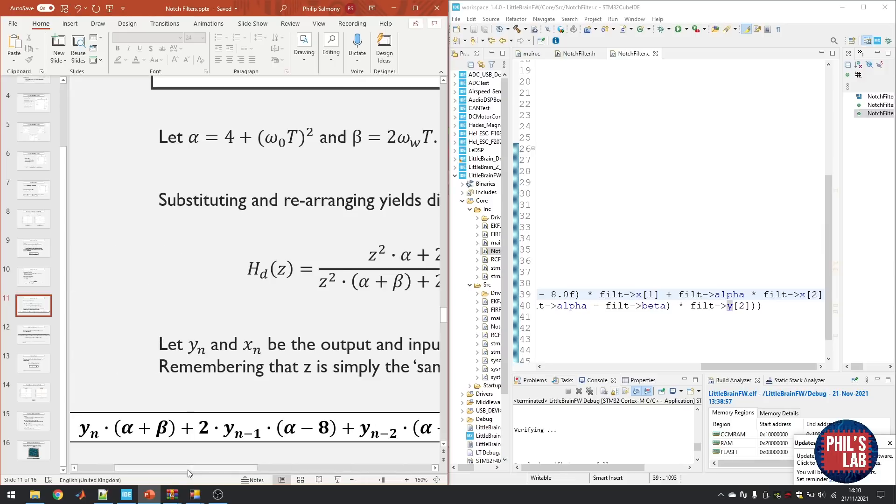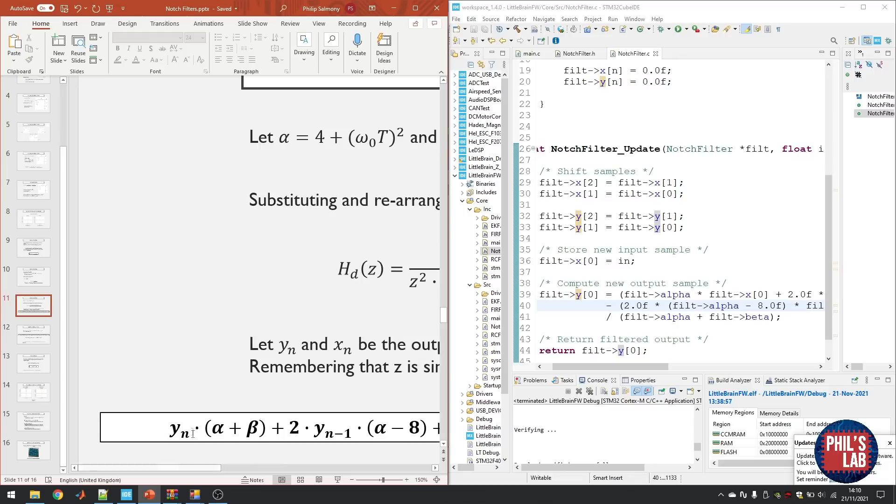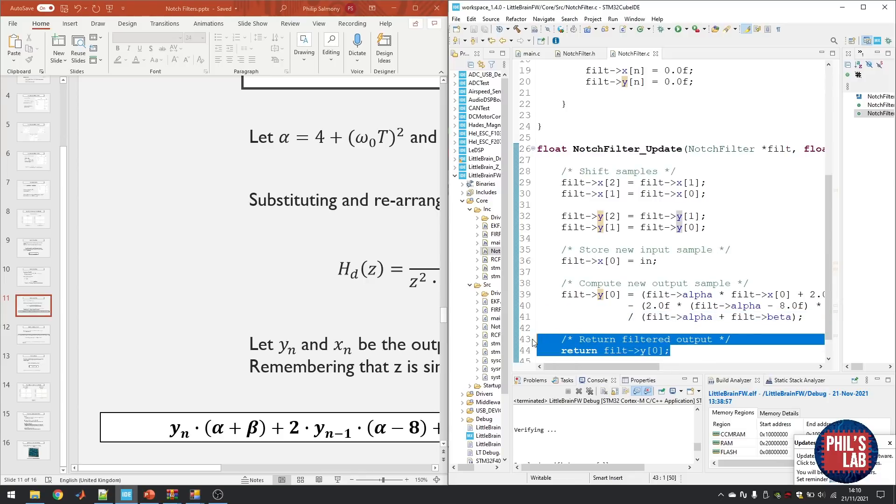Then I have to subtract from that these two terms over here, which I've done on the next line. And finally, because I want y[n], the latest output sample on its own, I have to divide the whole side by alpha plus beta, which is what I've done here. And that is a really easy way of implementing this notch filter. Then we simply return the filtered output and that's it.